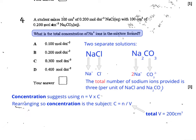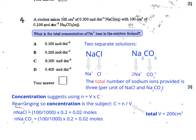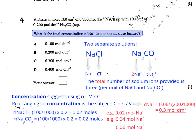Now work out the number of moles of sodium ions from each of the individual solutions. Take the volume of each solution separately, divide by 1000, then multiply by its concentration — you get 0.02 moles in each case. One mole of NaCl gives one mole of Na⁺, but one mole of Na₂CO₃ gives 0.04 moles of Na⁺, so you get 0.06 moles in total. Using concentration = moles ÷ volume gives 0.03 mol dm⁻³ as the total concentration, which gives us answer C.